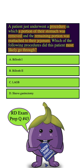Let's start with A. A Bilroth 1 procedure, which is also known as a gastroduodenostomy, involves attaching the remaining portion of the stomach to the duodenum — not the jejunum. Considering what we have in the question, we can safely eliminate this answer choice.